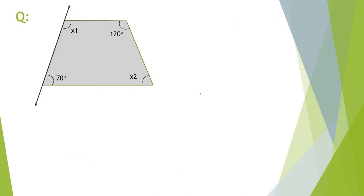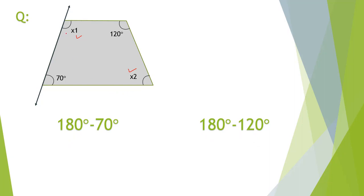If we need to figure out angles x1 and x2 in a trapezoid, it is straightforward since each pair is supplementary. 180 minus 70 equals 110, so x1 is 110 degrees. 180 minus 120 equals 60, so x2 is 60 degrees.